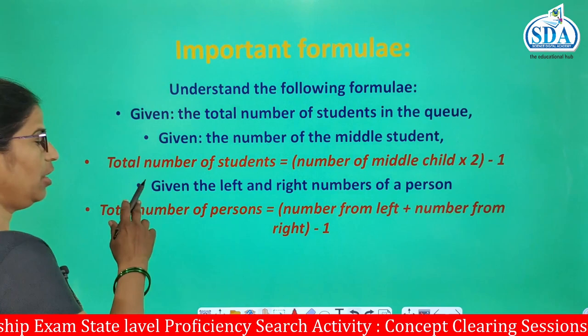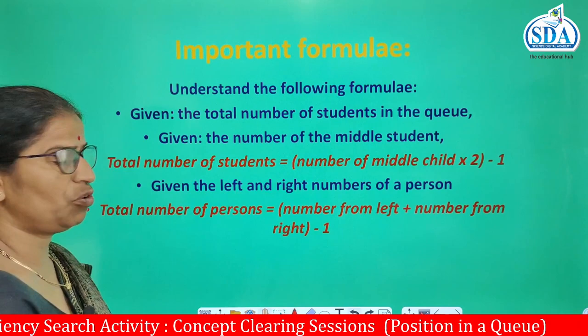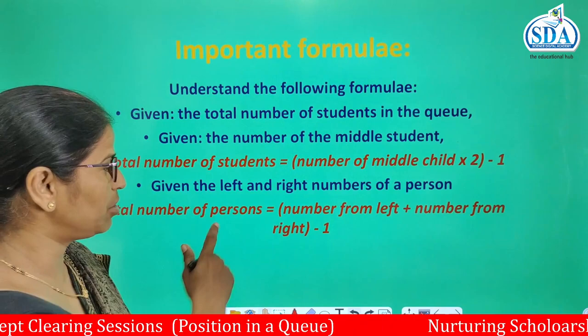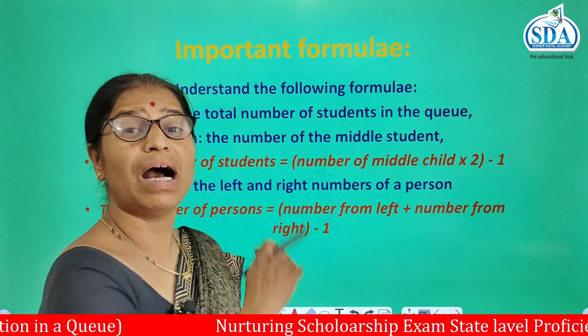If the left and right position numbers of a person are given, then the total number of persons can be found by the formula: number from the left plus number from the right minus 1.